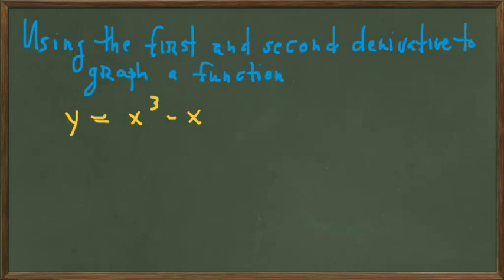In this video, we're going to use the shape information we identified in the previous video to generate a very accurate graph of the equation y equals x cubed minus x, with a minimum of points and all of the shapes that the function has identified through the first and second derivatives.